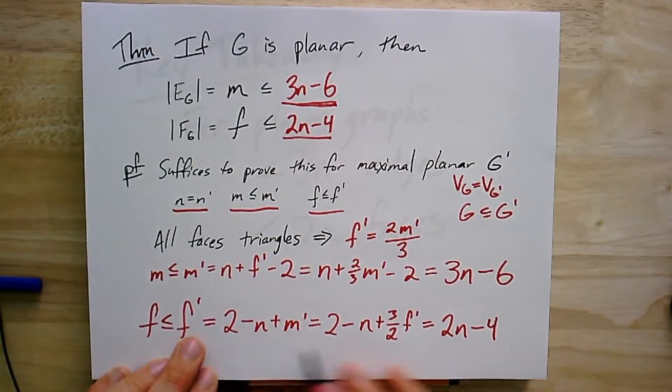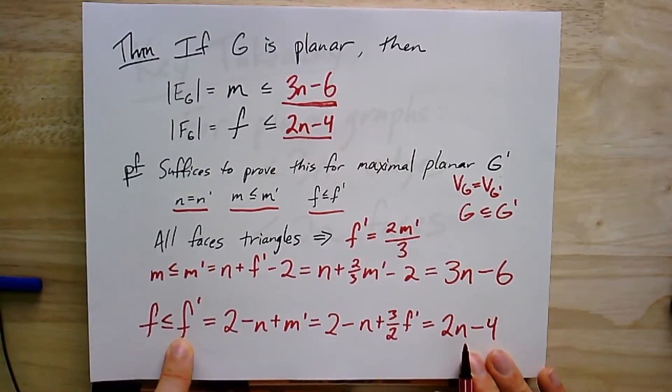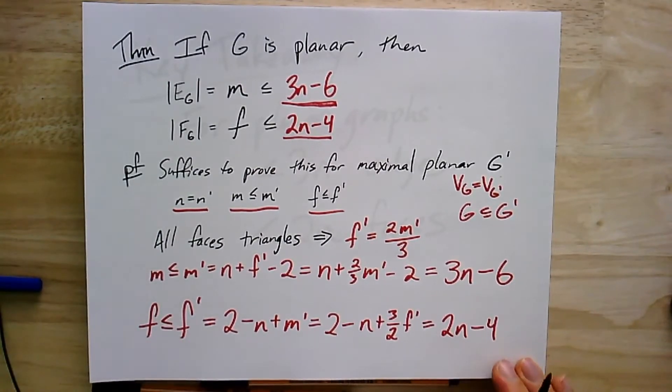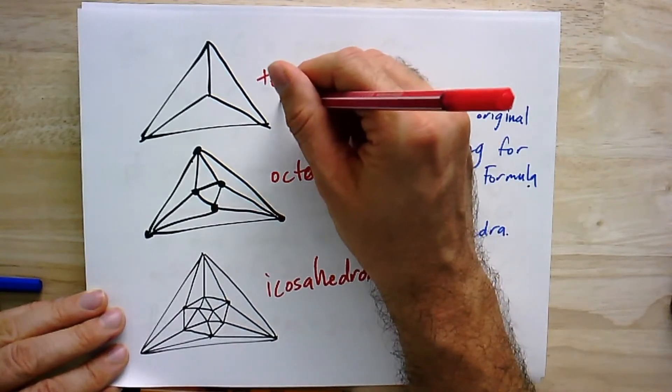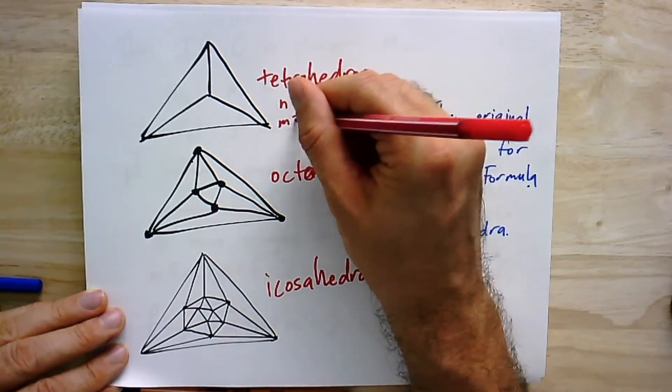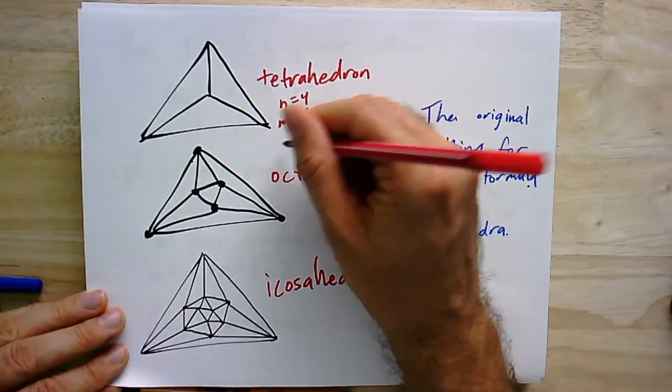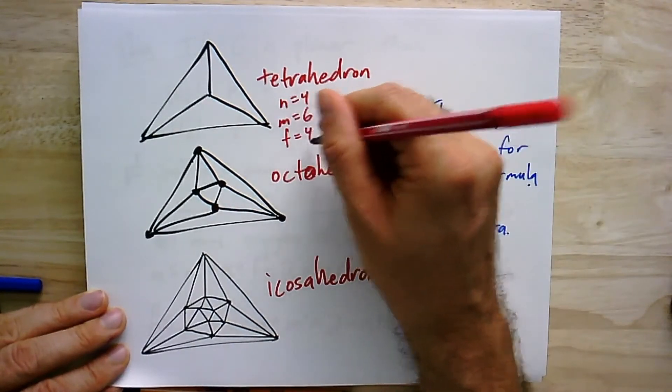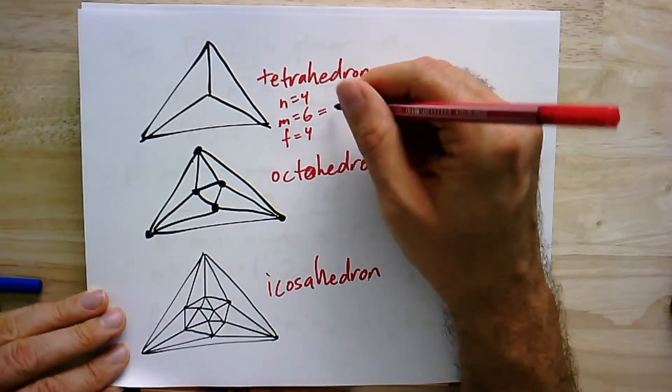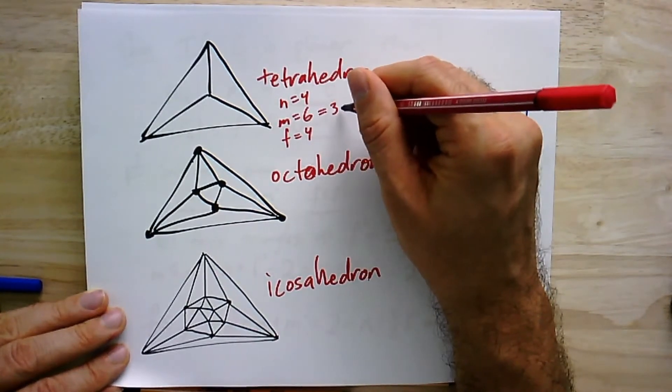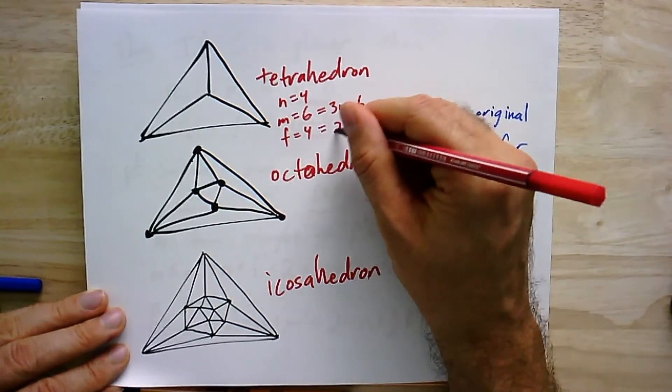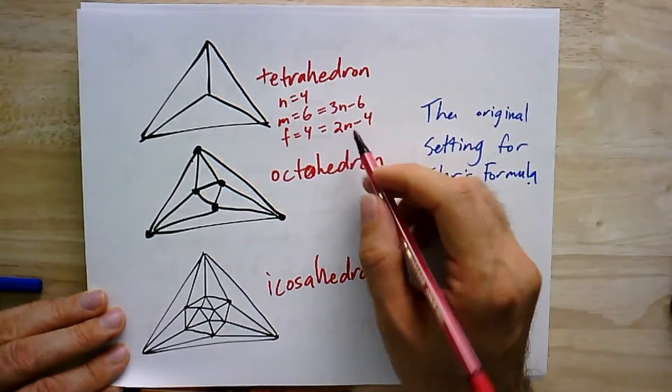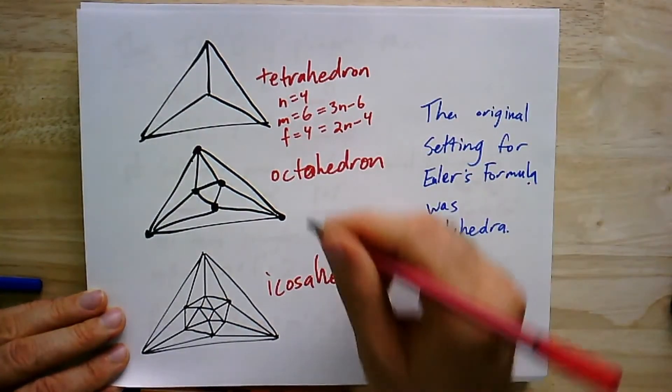2n minus 4. Again, it's all equal signs once I'm working with the maximal planar graph. So it's actually realized in the case of maximal planar graphs. And we could just do a quick sanity check that we, in fact, did this. Let's just look at the tetrahedron. The tetrahedron had n equals 4, m equals 6, and f equals 4. So this is, in fact, equal to 3 times n minus 6. 3 times n is 12 minus 6. And this is, in fact, equal to 2n minus 4, because 2 times n is 8 minus 4 is 4. So that one works.